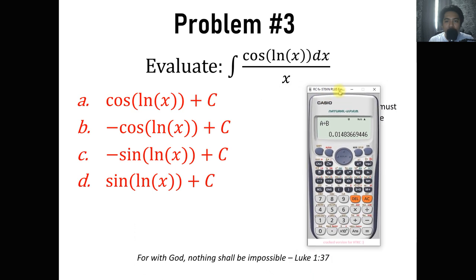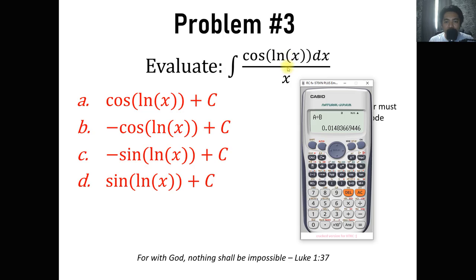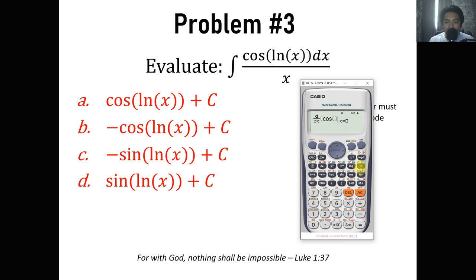Problem number 3: the integral of cosine of ln(x) dx all over x. Using the same principle, type the expression without the integral sign — cosine of ln(x), all over x — then substitute 0.1 and calculate. Store the value to A using shift store A. Then go to the choices and start differentiating, starting with letter A: cosine of ln(x).